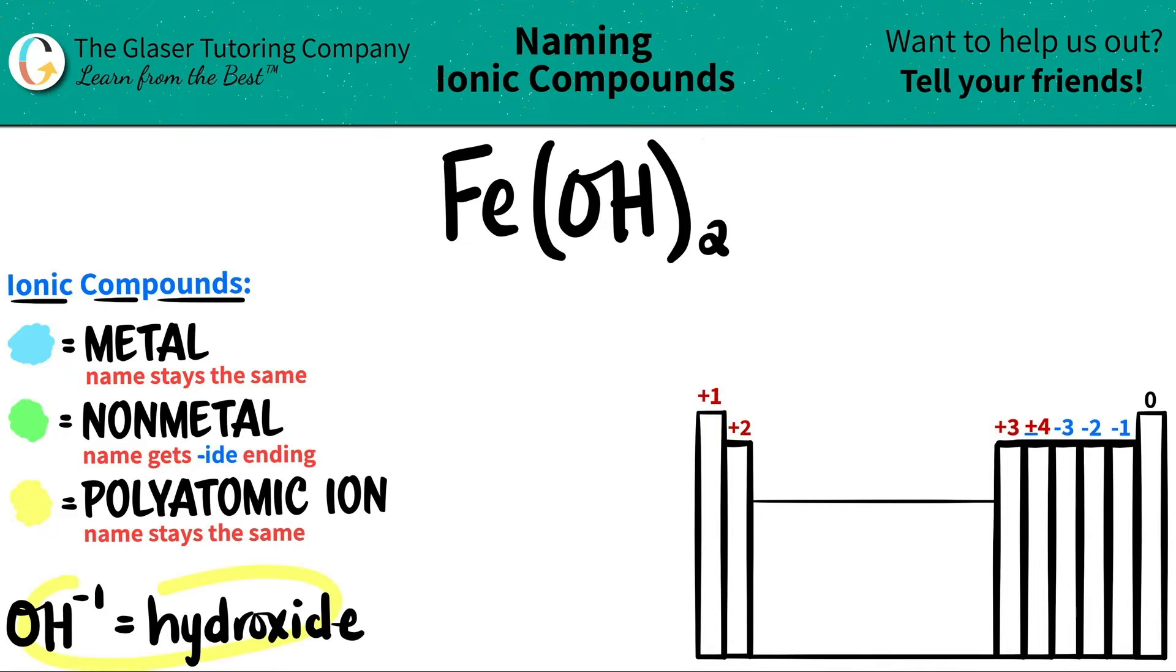So I wrote down the polyatomic that we're going to see here. Just use flashcards or write them out, but you're going to see these all the time throughout your chemistry course. OH, which always has a negative one charge, is called hydroxide.